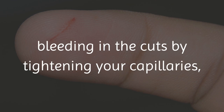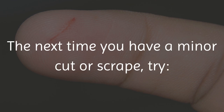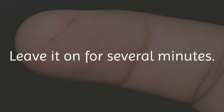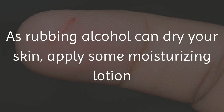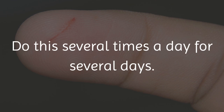Rubbing alcohol can also help to stop bleeding in cuts by tightening your capillaries. The next time you have a minor cut or scrape, apply some rubbing alcohol to the affected area using a cotton ball. Leave it on for several minutes. As rubbing alcohol can dry your skin, apply some moisturizing lotion or simply aloe vera gel on the area after you are done. Do this several times a day for several days.